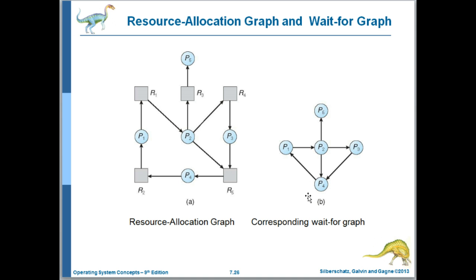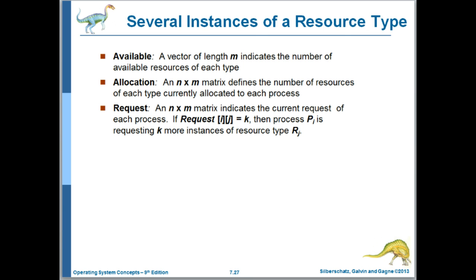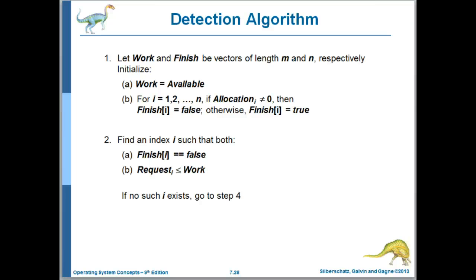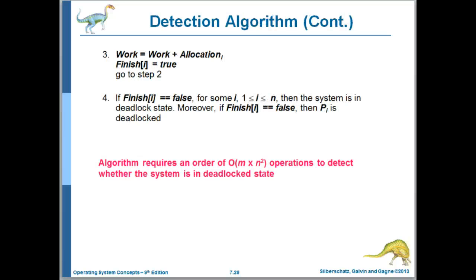Our next step would be to do something to eliminate the cycles. If we were to eliminate just process one, note that that would still leave this cycle. So if we're trying to minimize the number of processes we terminate, we'd want to terminate either process four or process two. If we have several instances of one of the resource types, we run the safety algorithm — this should look familiar — and see whether we finish or not. If all of the processes can't finish, then those that can't finish are deadlocked.